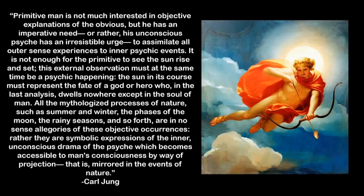Primitive man is not much interested in objective explanations of the obvious, but he has an imperative need — or rather, his unconscious psyche has an irresistible urge — to assimilate all outer experiences to inner psychic events. It is not enough for the primitive to see the sun rise and set. This external observation must at the same time be a psychic happening. The sun in its course must represent the fate of a god or hero who, in the last analysis, dwells nowhere except in the soul of man. All mythologized processes of nature, such as summer and winter, the phases of the moon, the rainy seasons, are symbolic expressions of the inner unconscious drama of the psyche, which becomes accessible to man's consciousness by way of projection — that is, mirrored in the events of nature.